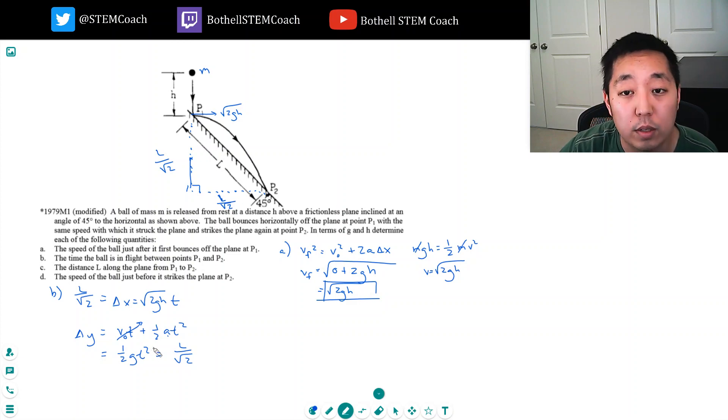I can set them equal to each other. I could say one-half gt squared equals square root of 2gh times t, right, because I have this delta x equals delta y. So I can have this equals this. So one of the t's cancel.